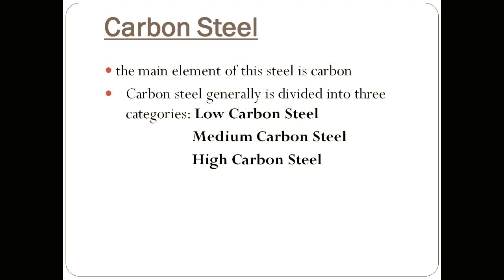Moving on to carbon steel — the main element is carbon. If a lower carbon percentage is present, the material will be more ductile. As we increase the carbon percentage, the steel becomes more heat-treatable and can be hardened more. However, there is a demerit: higher carbon content makes the steel difficult to weld.